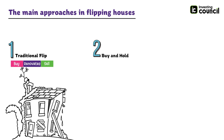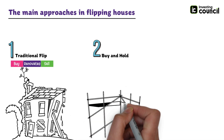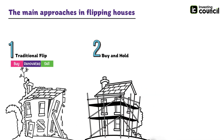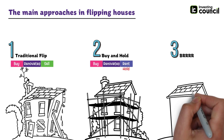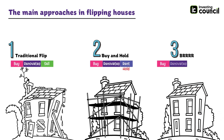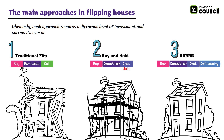The second approach is buy and hold, which involves buying a property, renovating it, and then holding on to it as a rental property. The investor makes money by renting out the property and earning rental income. The third approach is BRRRR, which stands for Buy, Renovate, Rent, Refinance, and Repeat. This involves buying a property, renovating it, renting it out, refinancing to pull out the invested capital, and then repeating the process. Each approach requires a different level of investment and carries its own unique risks and benefits.